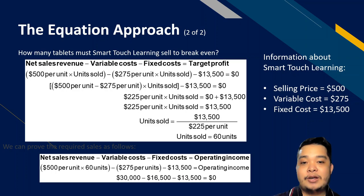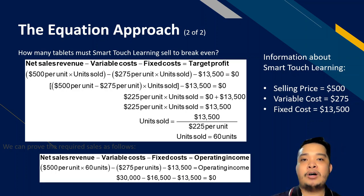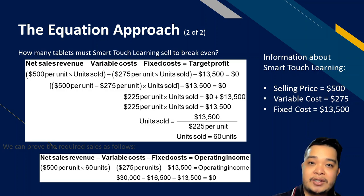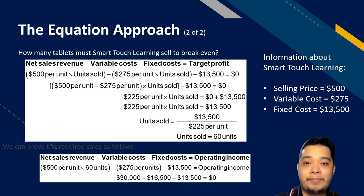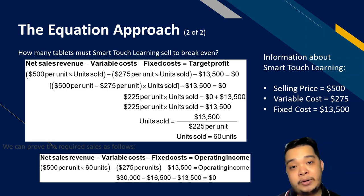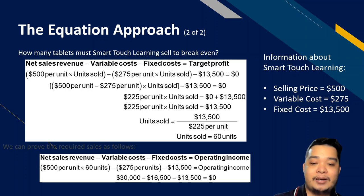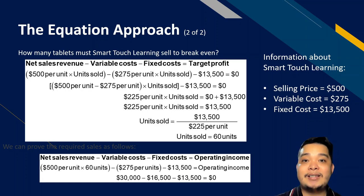When we talk about break-even sales in dollar terms, that is 60 units times $500 per unit, giving a break-even sales figure of $30,000. The break-even volume is 60 units and the break-even sales is $30,000.